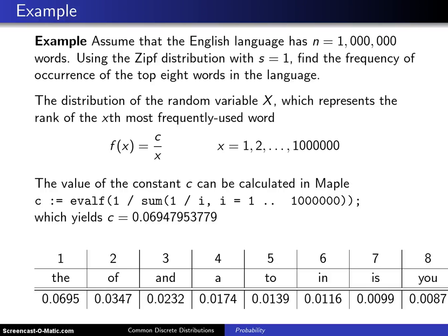Here is an illustration of the Zipf distribution. Assume that the English language has n equals one million words. Using the Zipf distribution with s equals one,